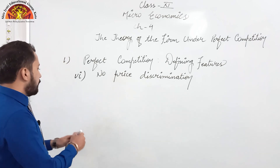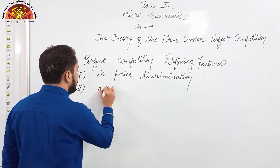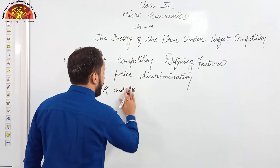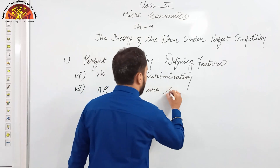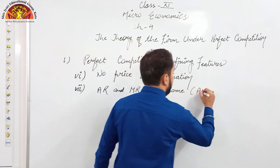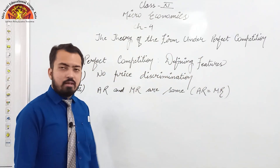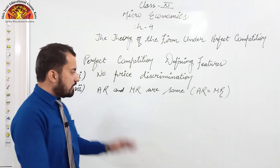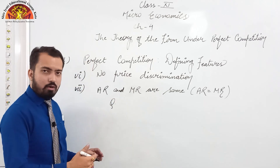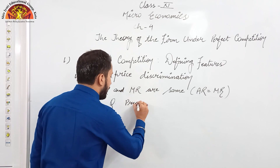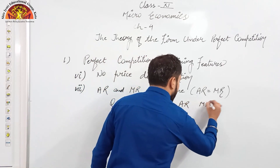Point number 7, also very important, is that AR and MR are the same — AR equals MR. AR stands for average revenue and MR stands for marginal revenue. This will become very clear with a small table. The columns are: quantity of product purchased, price of the product, TR (total revenue), AR (average revenue), and then MR (marginal revenue).